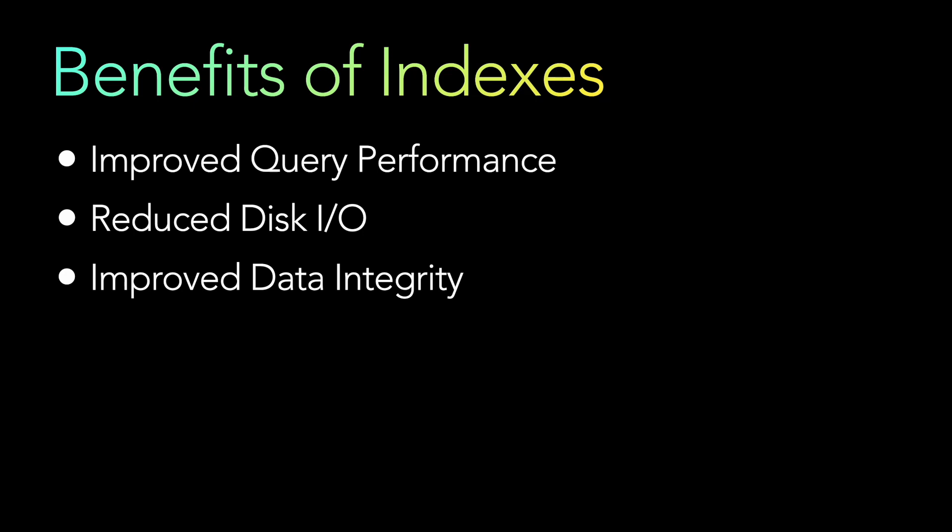Third, improved data integrity: indexes enforce data integrity by ensuring duplicate records are not added to the table. When you create an index on a column, that indexed column stays unique — duplication of data is prevented. This is achieved through unique indexes, where the database engine automatically checks for duplicates before inserting a new record. If a matching record exists, it maps it to the same row in the index rather than creating a new one.